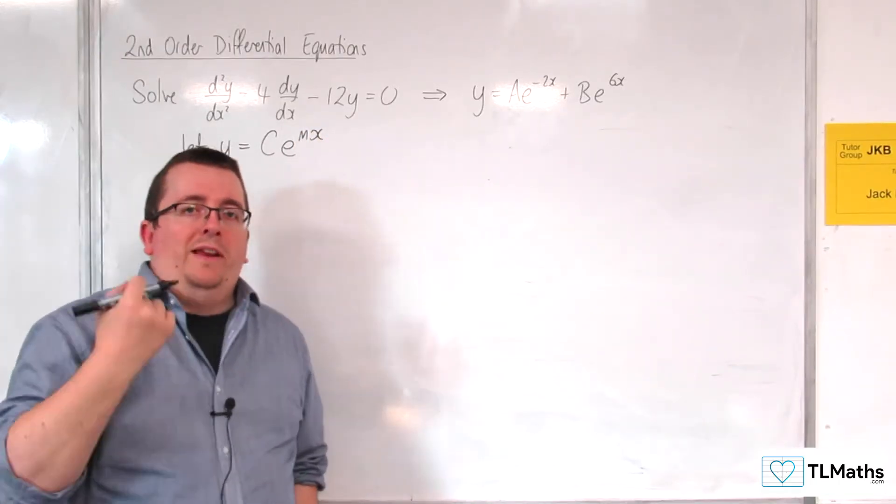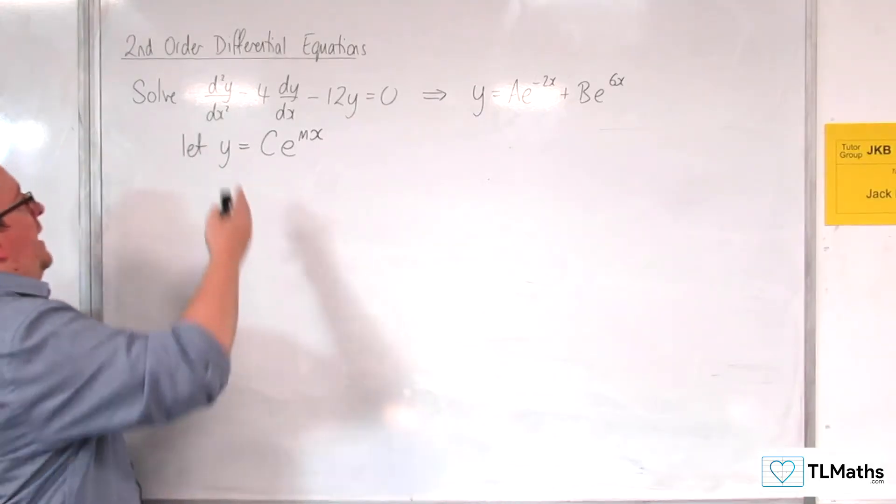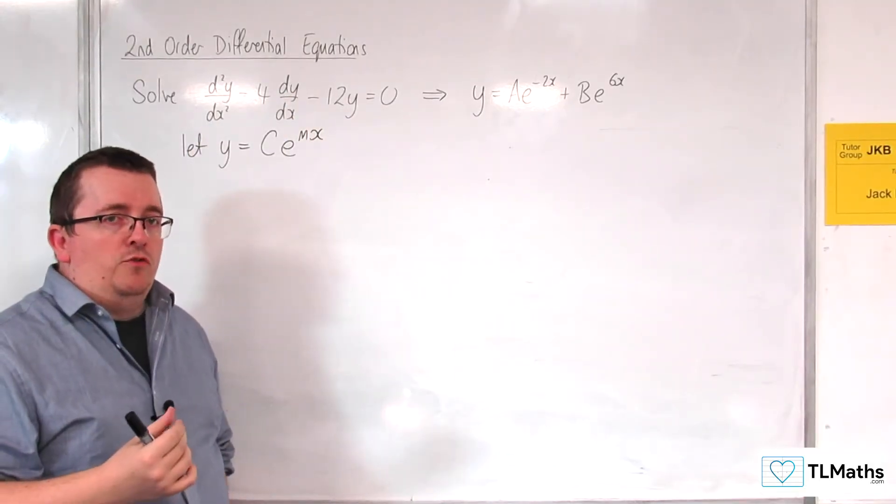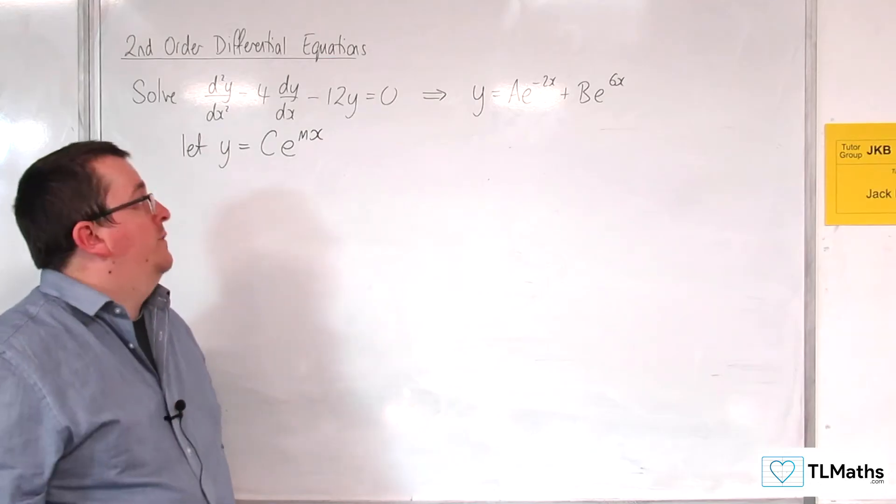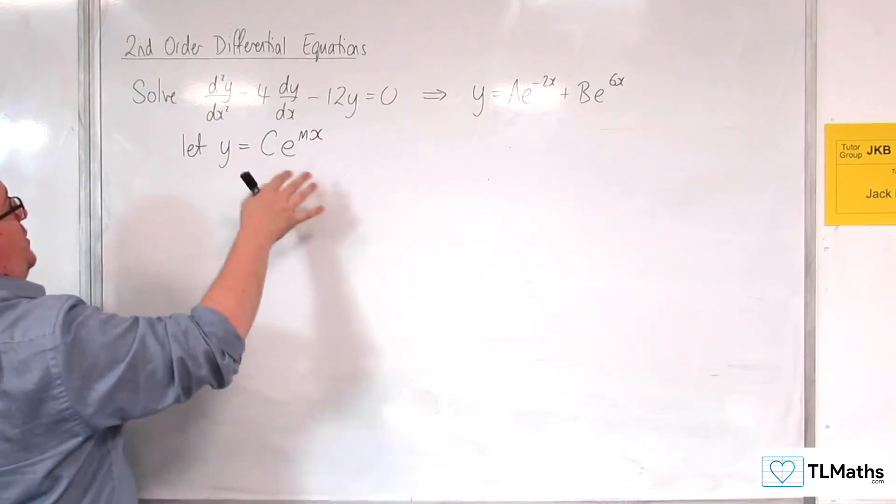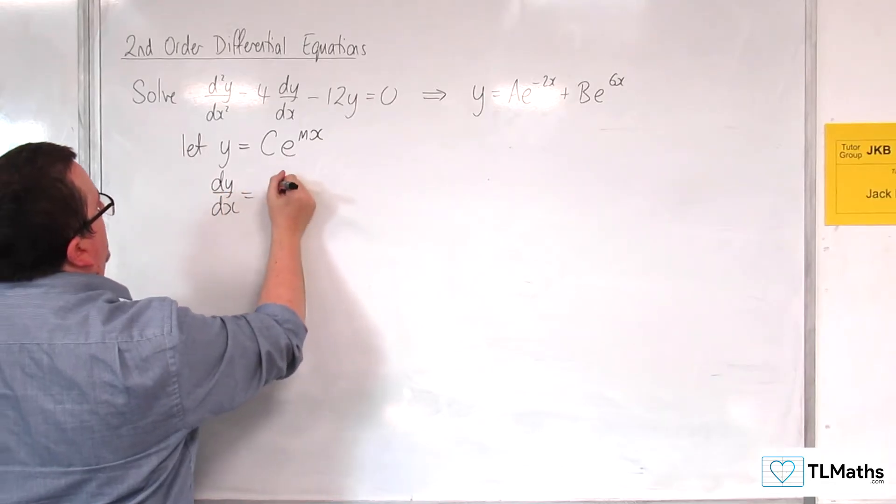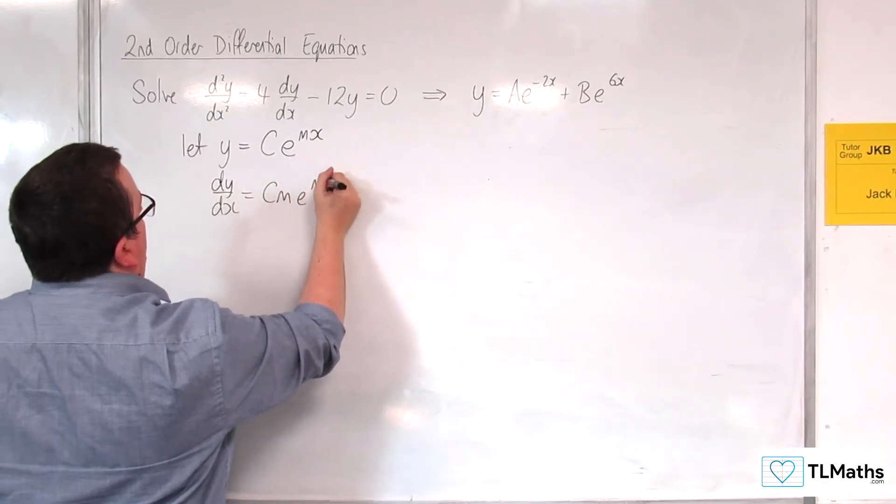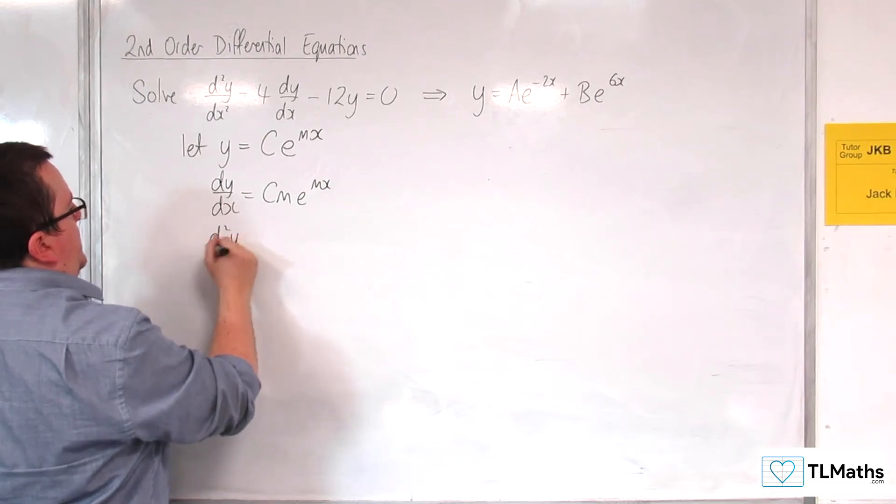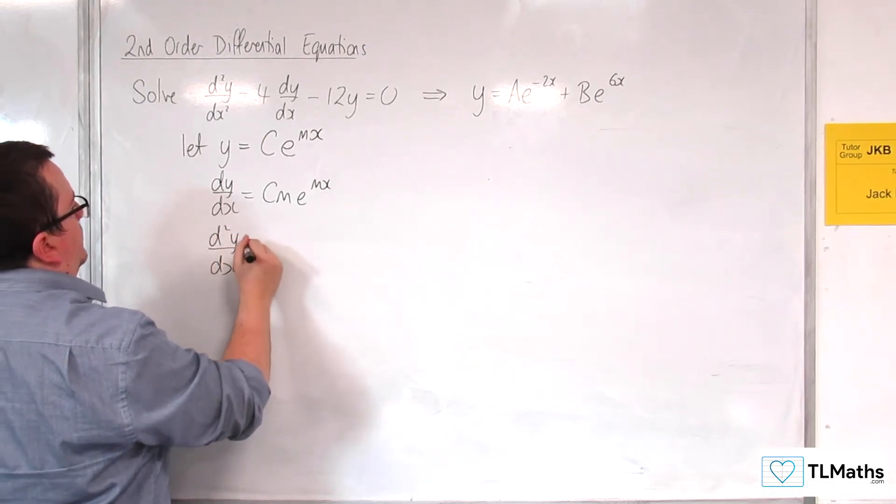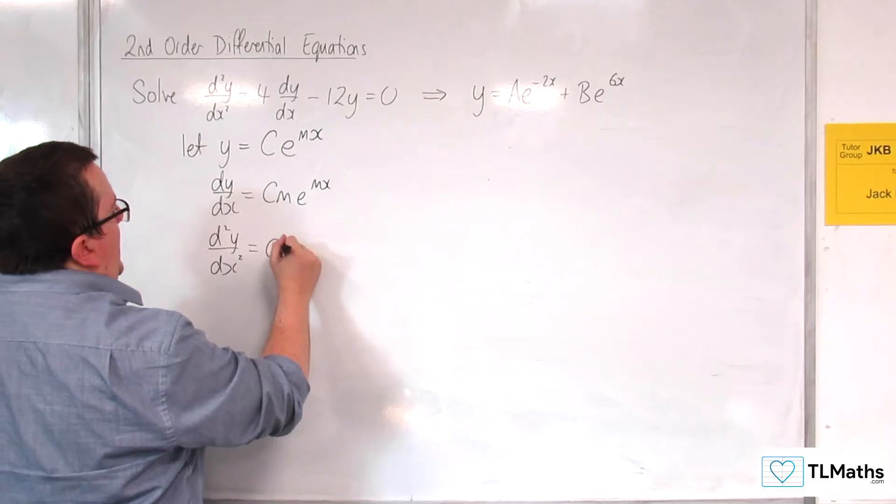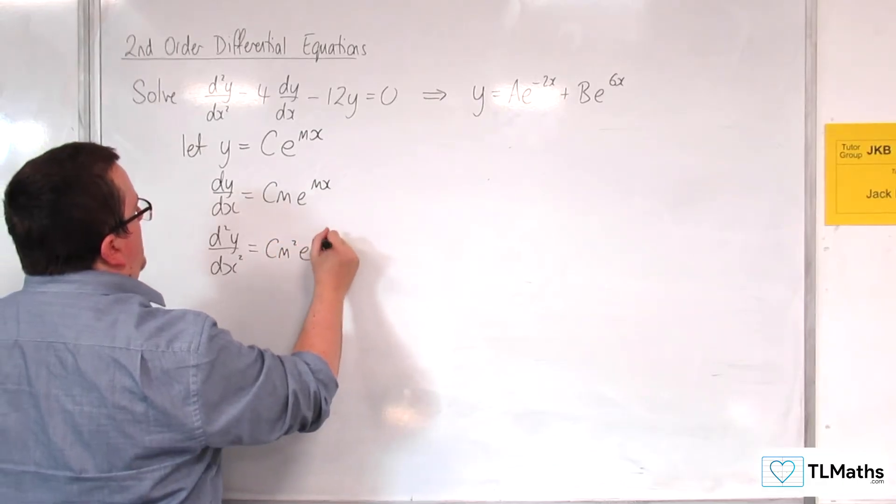So let's say I do that and substitute it into my second order differential equation. In order to do that, I'm going to have to find dy/dx, which is going to be cme^(mx), and I need to find the second derivative as well, which would be cm²e^(mx).